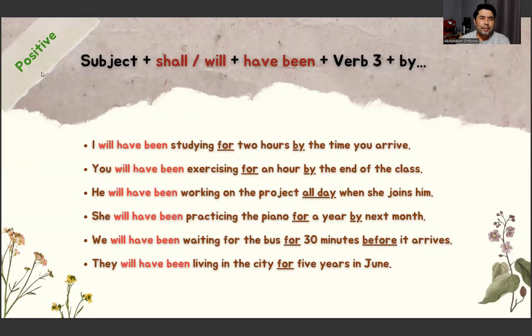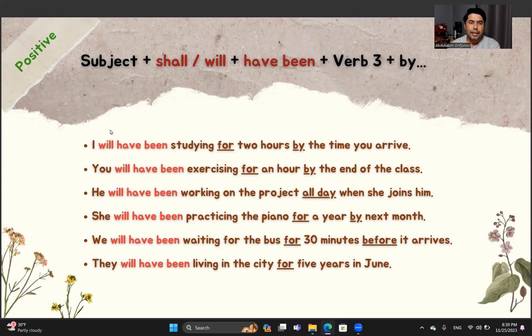Positive sentence structure: subject + shall/will + have been + verb 3 + time expressions. Example: I will have been studying for two hours by the time you arrive.